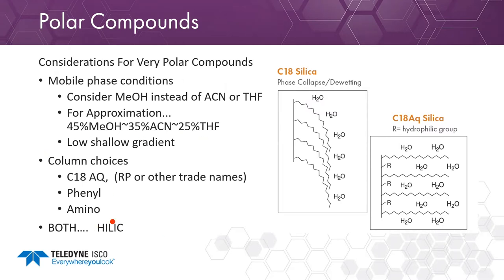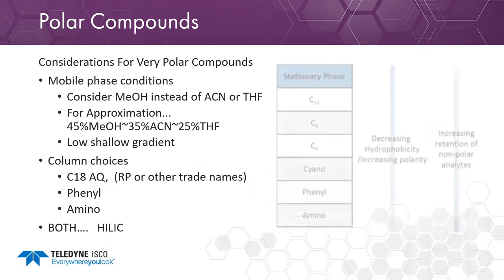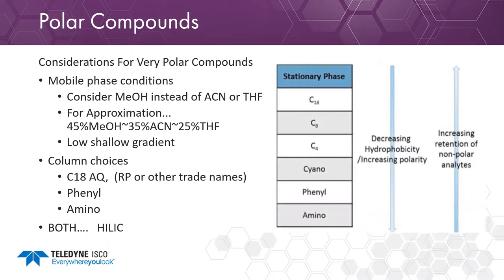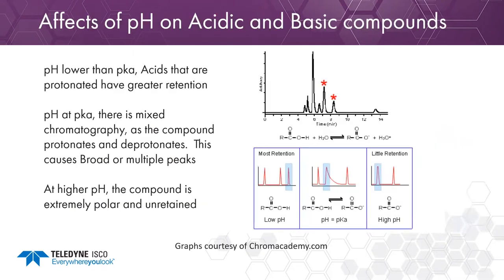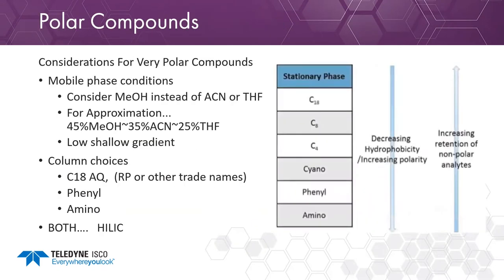Column choices: you can go phenyl or amino if you want to work with more polar compounds. We have a stationary phase chart showing the common compounds based on the actual stationary phase and the ability to use them based on decreasing or increasing hydrophobicity. This is just a general rule of thumb — there are always rules and outliers in just about everything, but this is a general guide we like to use.